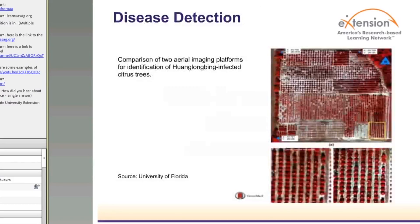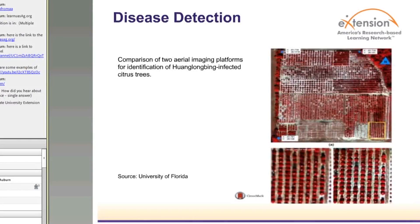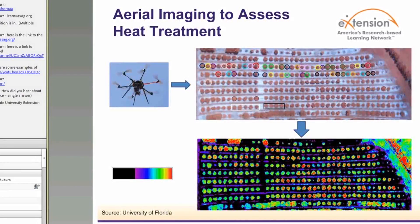Unmanned aircraft is increasingly being used for assessing the effectiveness of disease control practices. One such disease-related application in Florida citrus also provides an assessment of advantages gained by deployment of an unmanned aircraft platform over traditional aircraft. Typically, unmanned aircraft is flown no more than 500 feet above ground level and a variety of consumer-grade cameras can be attached for acquiring images. The unmanned aircraft provides the advantage of capturing images with higher spatial detail, as you can see on the lower half of the screen.